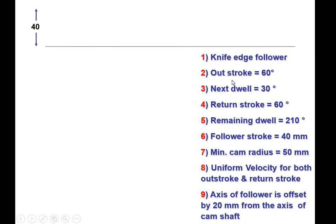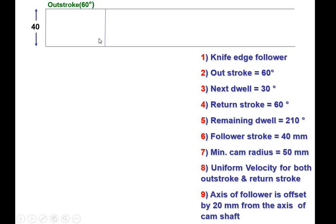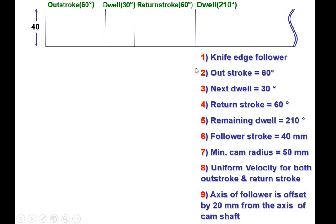Draw the horizontal line, then draw the vertical line as 40 mm for the stroke length, and then draw the horizontal line. First, outstroke is 60 degrees. Take the scale as 1 cm equal to 10 degrees, so the outstroke length is 6 cm. Then the next dwell is 30 degrees — 3 cm. Then return stroke is 60 degrees — 6 cm. The remaining dwell is 210 degrees; you can use a symbol for that. Now divide the outstroke angle into 6 equal divisions and give the names 0, 1, 2, 3, 4, 5, 6, and draw vertical lines through all these points.